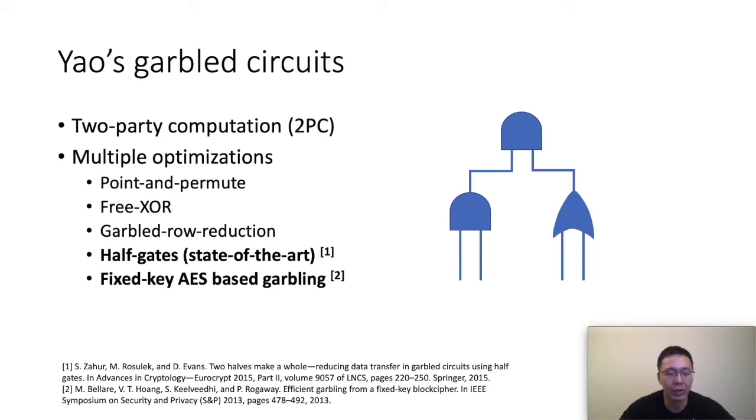Another important optimization is the half-gate. It is the state-of-the-art garbling scheme. As we know, the garbled circuit has a huge burden on network communication. Before the half-gate, the free XOR technique has made the computation of the XOR gate free, and the half-gate reduced the network communication on the AND gate. It is also compatible with all these optimizations. Another important optimization is the fixed-key AES-based garbling. It was first used in the garbling scheme.